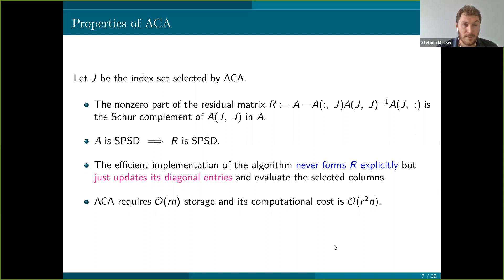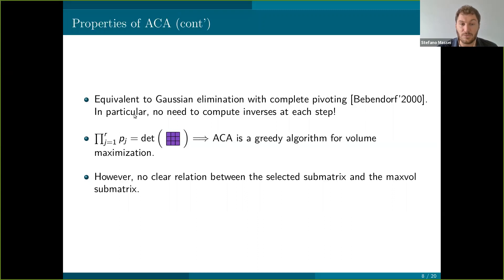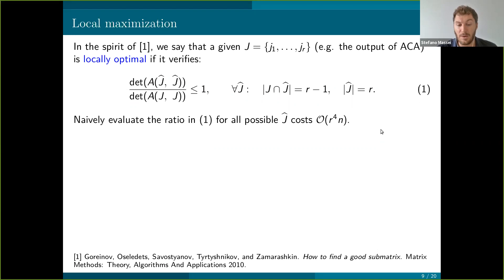Moreover, this can be shown to be equivalent to Gaussian elimination with complete pivoting, at least in this structured case. The product of the pivot elements that we select is equal to the determinant of the core factor. So this explains why ACA is a greedy algorithm for volume maximization, because in each step we select the pj such that makes this determinant as big as possible. However, when you end this algorithm, you have no idea of the relation between what you have and the maximum volume submatrices. So that's where our work started for the computational part because we wanted to provide a procedure that returns a submatrices that has some optimality property for its volume.